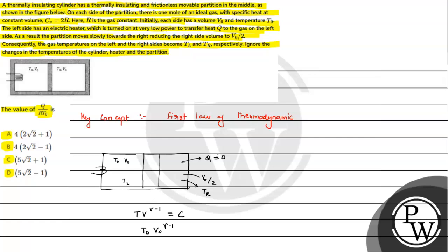We know that γ − 1 can be written as R/Cv by Mayer's relation, and γ = Cp/Cv. Since Cv is given as 2R, R/Cv = R/(2R) = 1/2, so γ = 1/2 + 1 = 3/2. For the right chamber, the initial condition gives T₀·V₀^(γ−1), and the final condition gives TR·(V₀/2)^(1/2). Solving this, TR comes out to be √2·T₀.